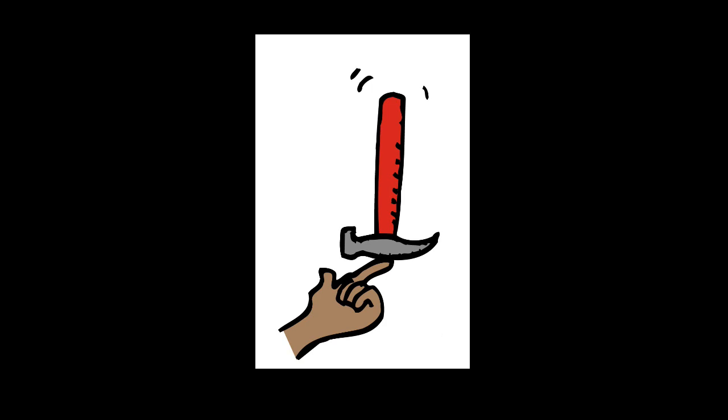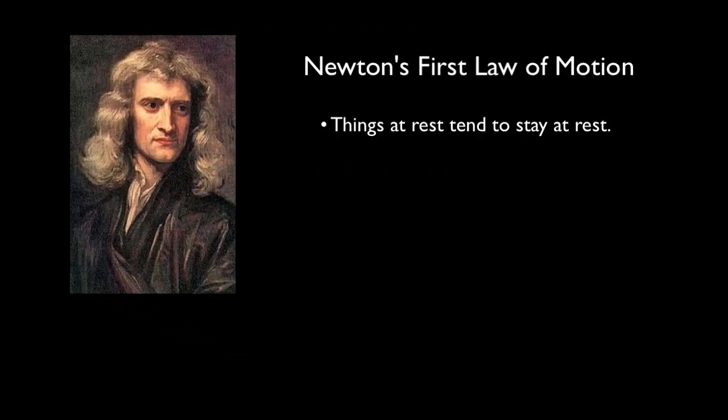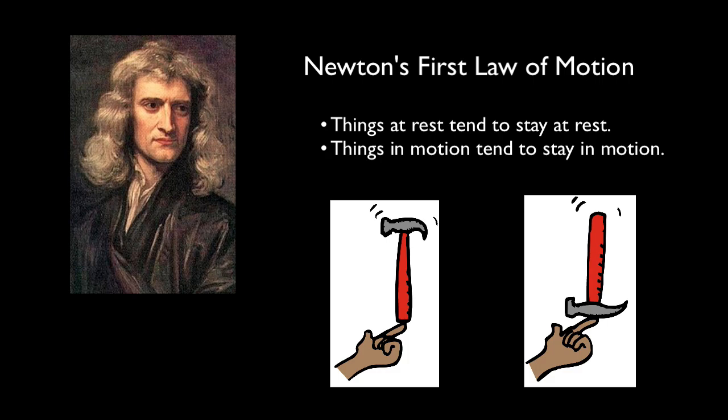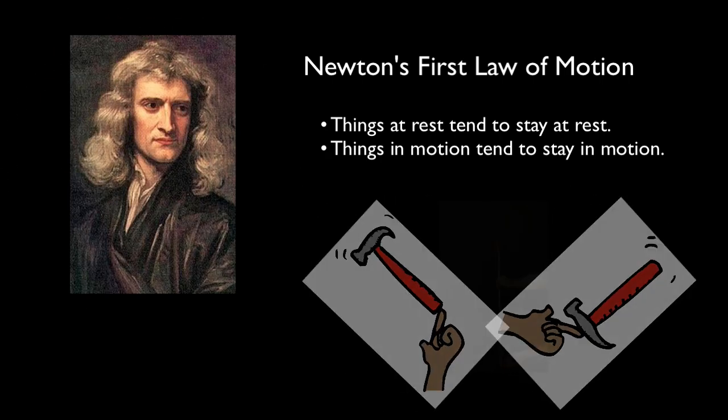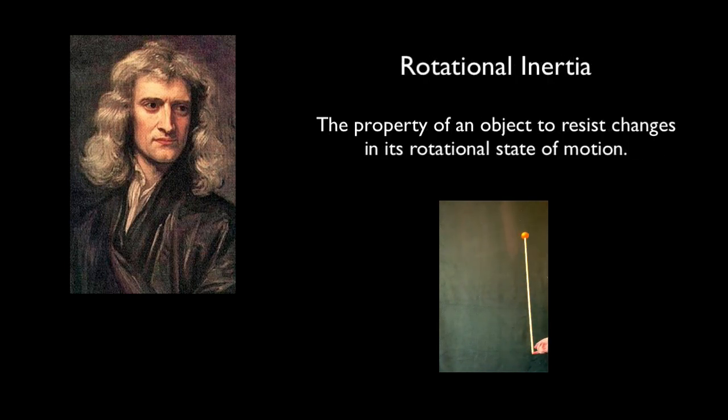We talked about inertia earlier with Newton's first law of motion. Things at rest tend to stay at rest. Things in motion tend to stay in motion. Here, however, we'll be looking at cases where the potential motion is rotational. We call this sort of inertia rotational inertia.